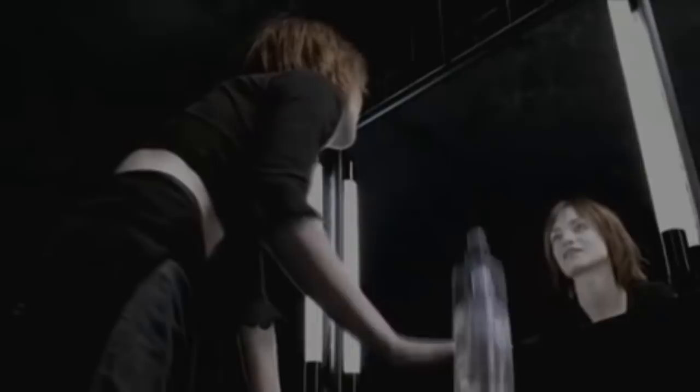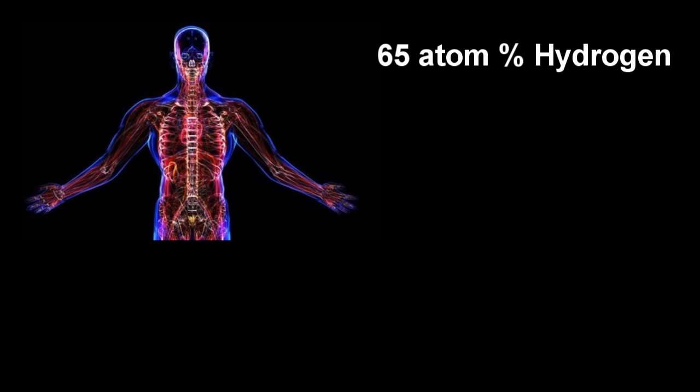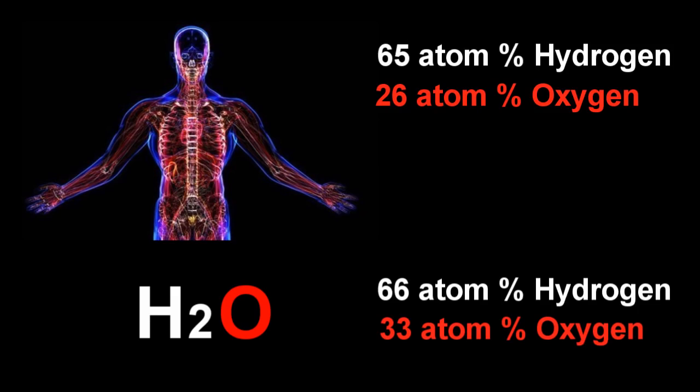Of what's left, about 26 atom percent is oxygen. And from this, you can instantly see that your body is mostly made up of water. Water being H2O, so that would be 66 atom percent hydrogen, 33 percent oxygen. Of what's left, about 6 atom percent is carbon, and 1.5 percent is nitrogen.